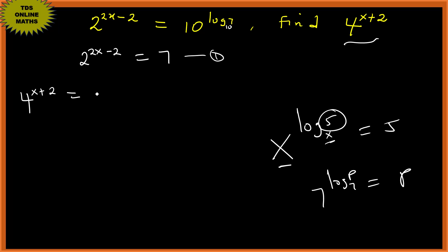Which is the same as 4 to the power x times 4 squared, which is 16 times 4 to the power x. So let's use this expression and find 4 to the power x and do substitution. Let's call this one the second equation.